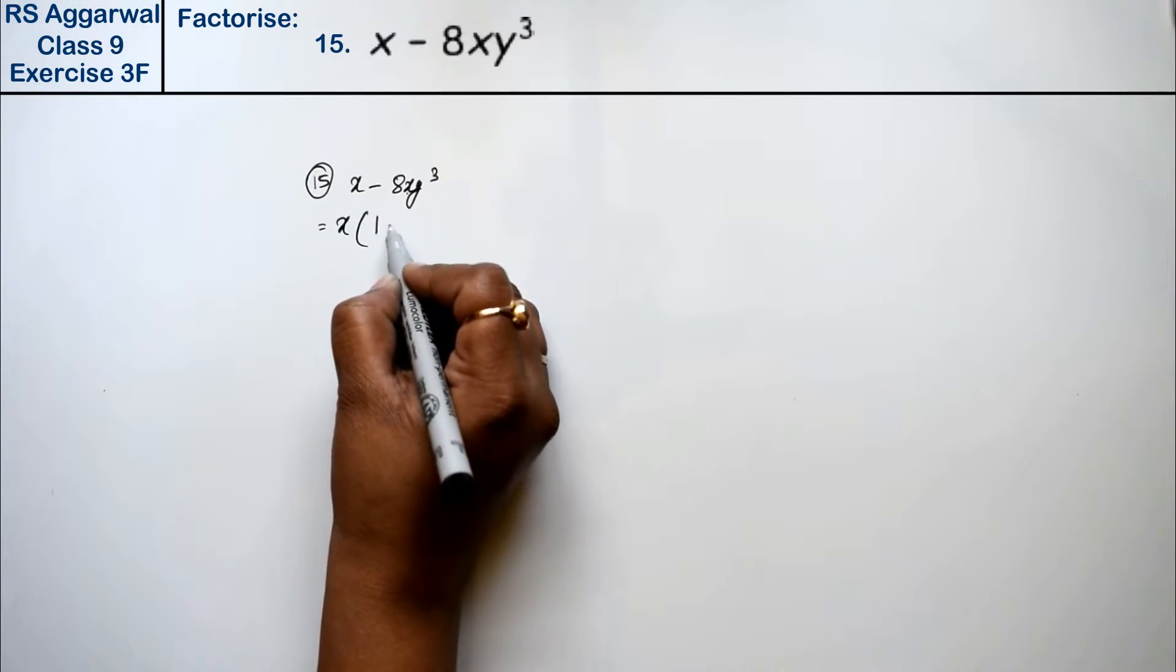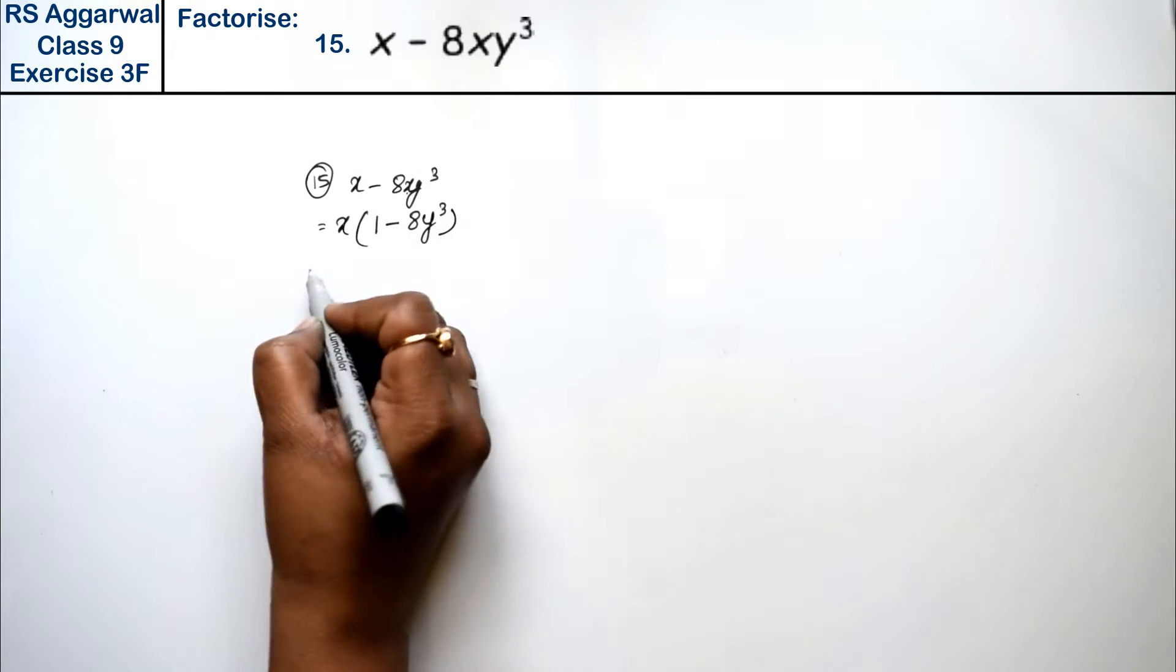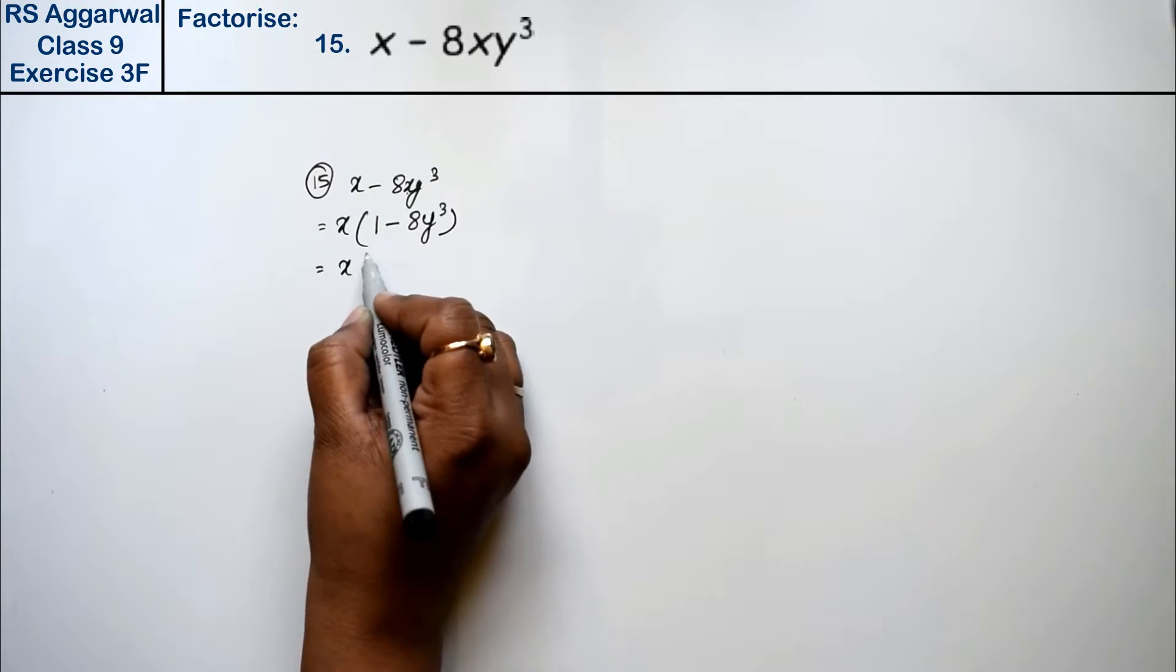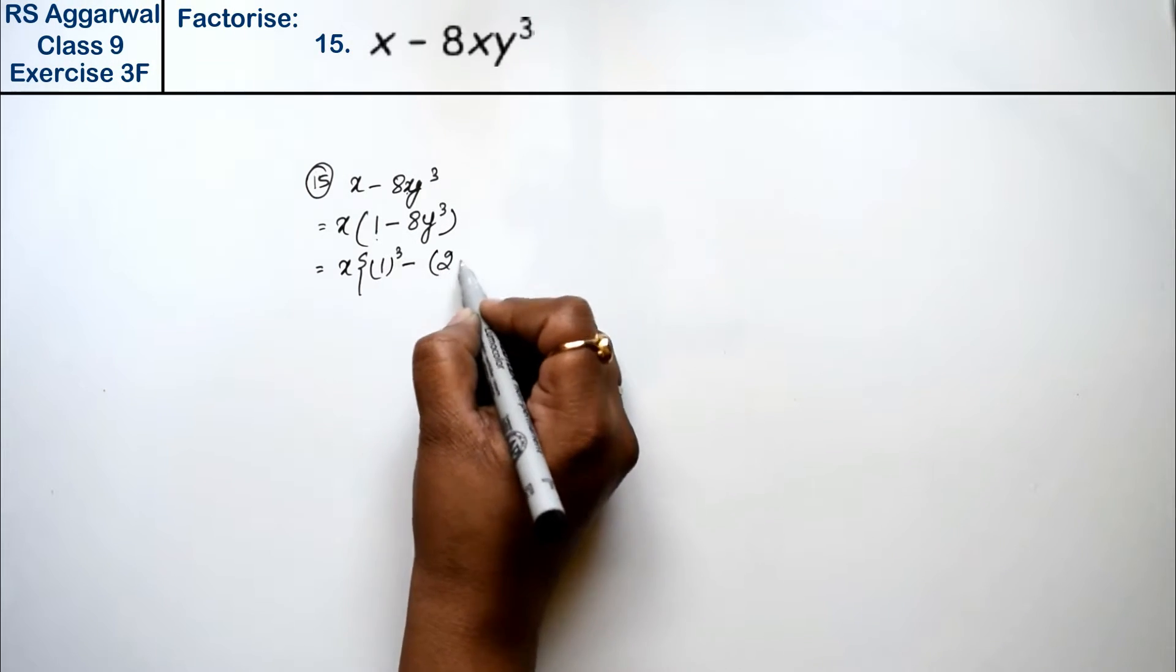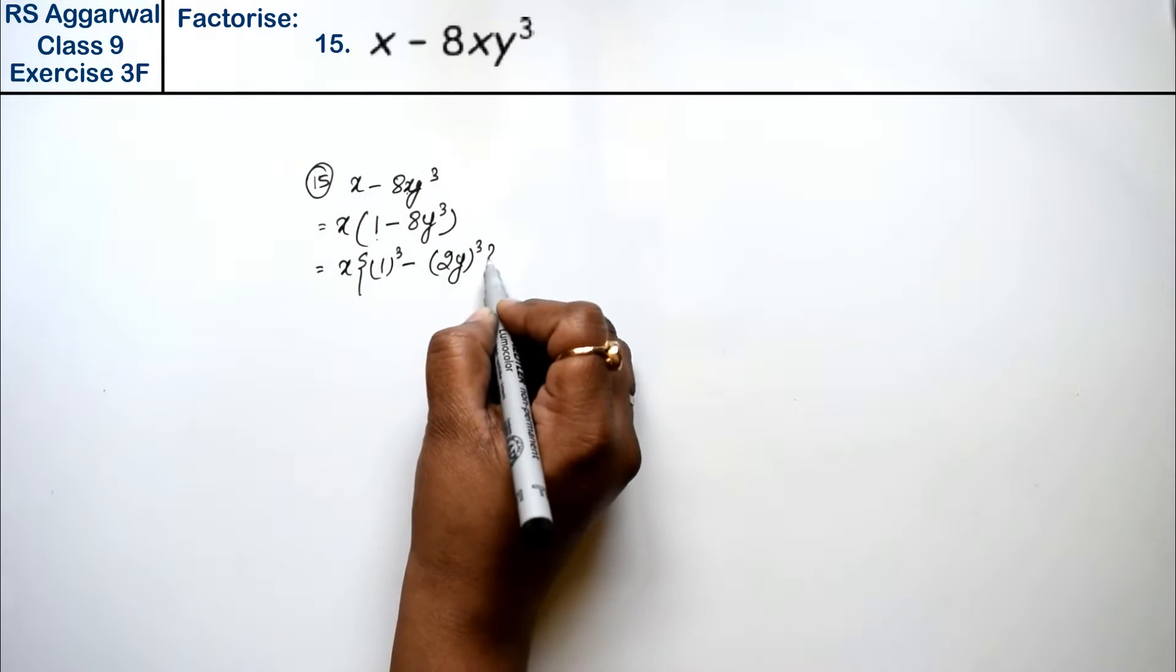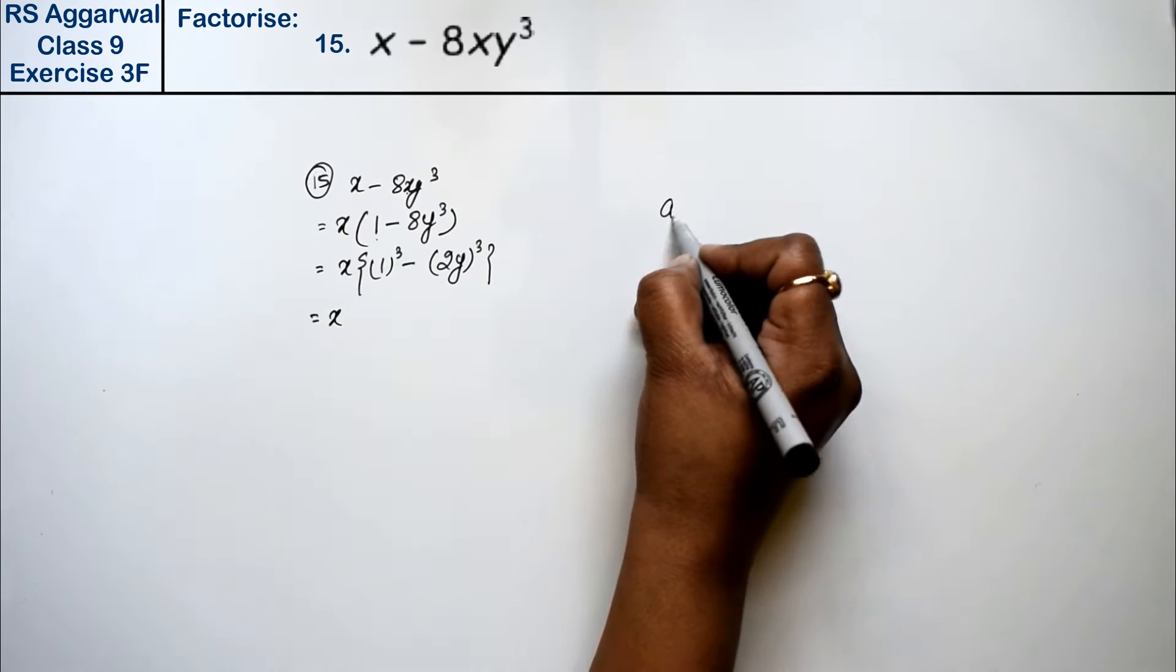So we have taken out x as common, so 1 minus 8y cube. Now we know that this is 1 cube minus 2y cube, we can write the whole cube.